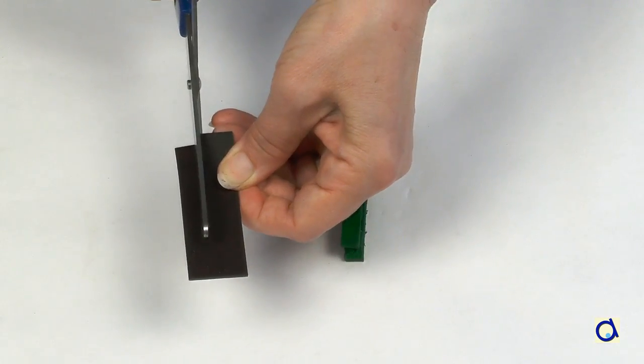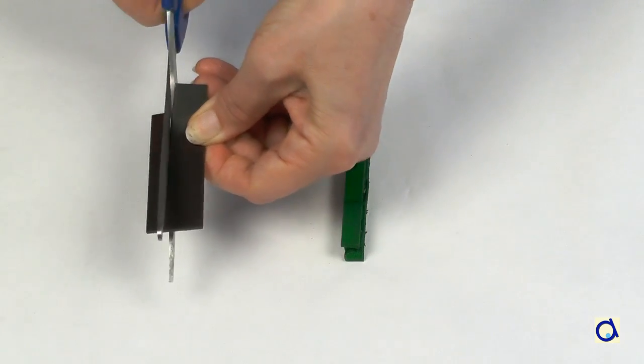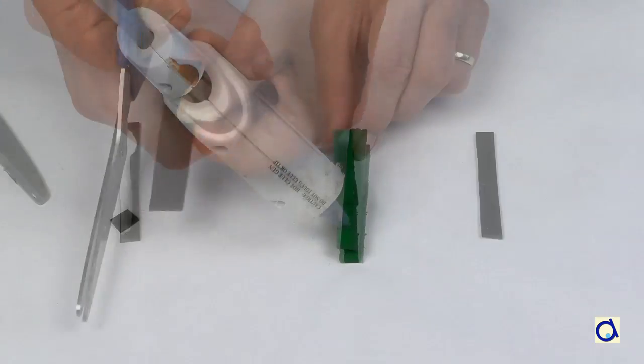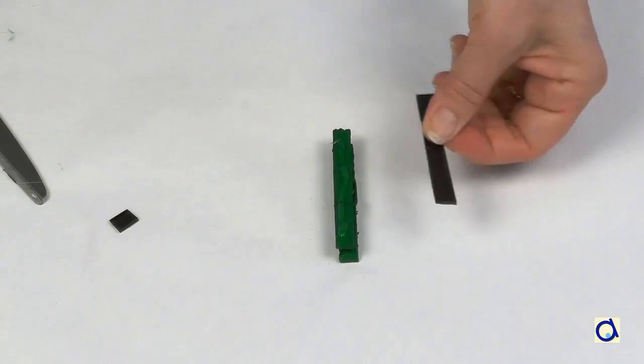Cut a piece of magnetic tape to the same width and length as the clothespin. If the tape is not self-adhesive, glue it on the clothespin with hot glue.